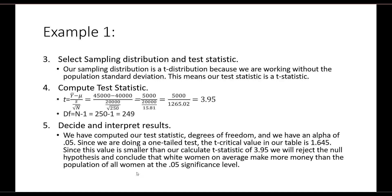To summarize: we computed our test statistic of 3.95, calculated degrees of freedom, and set alpha at 0.05. Since we did a one-tailed test, the t-critical value was 1.645. Since 1.645 is smaller than our calculated t-statistic of 3.95, we reject the null hypothesis and conclude that white women, on average, make more money than the population of all women at the 0.05 significance level.